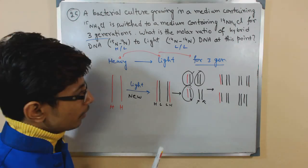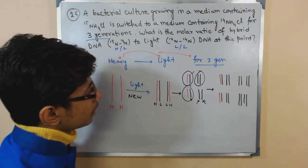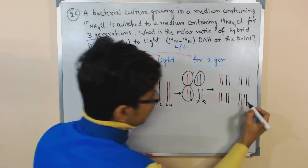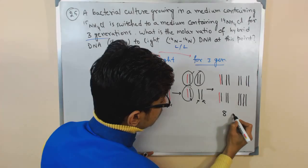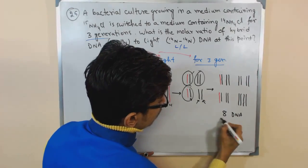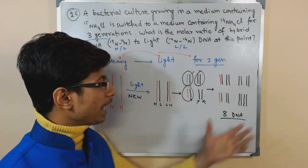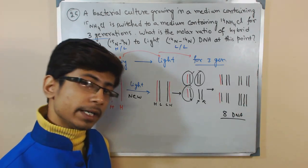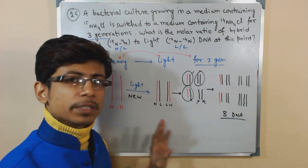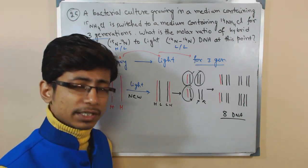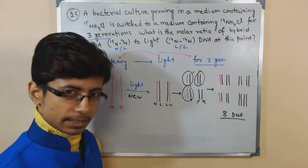So how many number of strands are produced there? Eight, right? Eight DNAs are produced during the three generation system. For this question's sake, but actually many more DNAs generally are produced, but let us say this is the content.